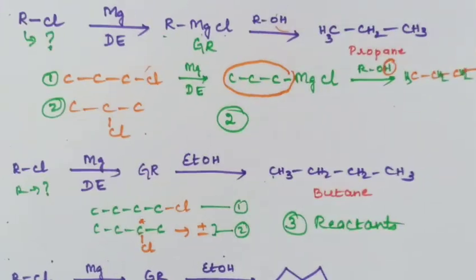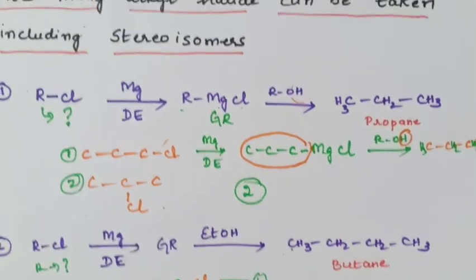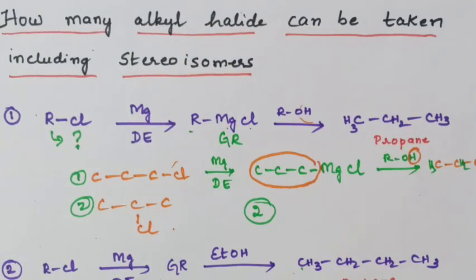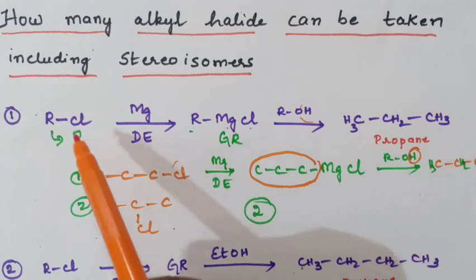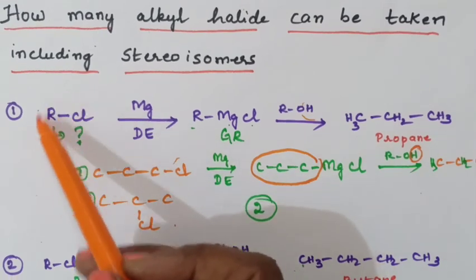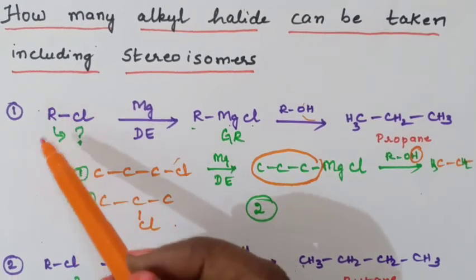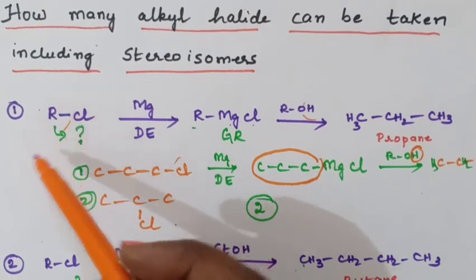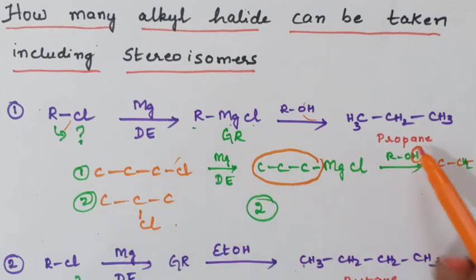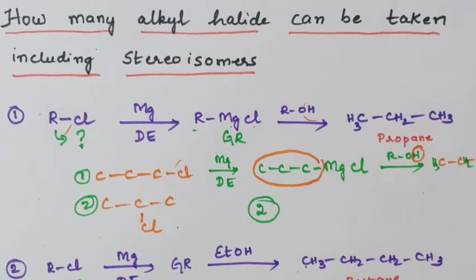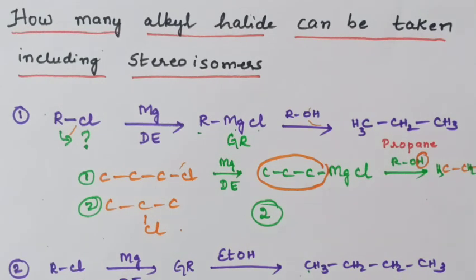This is how we can find the R groups when a product is given — you can guess the starting reagent, that is, which R group should be taken to get one particular product. I hope the concept is clear to you. If you have any queries, you can write in the comment box. I will meet you in the next video. Bye bye.